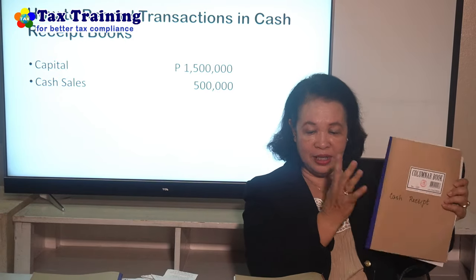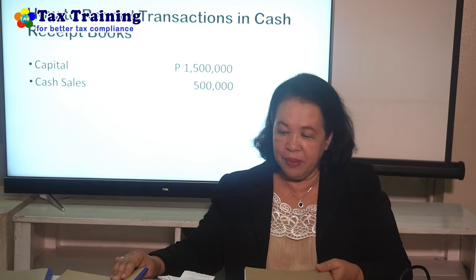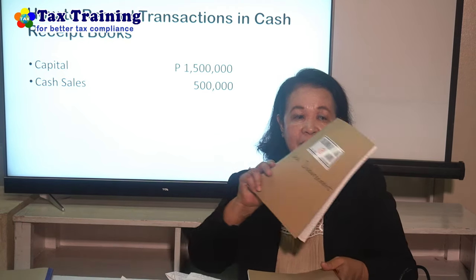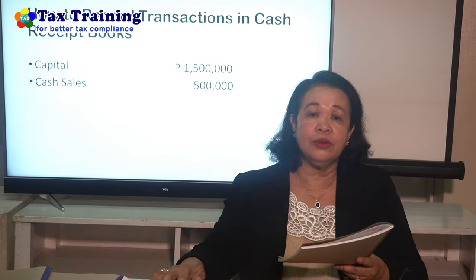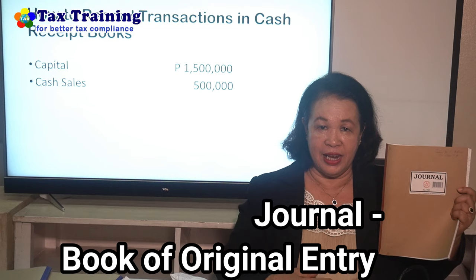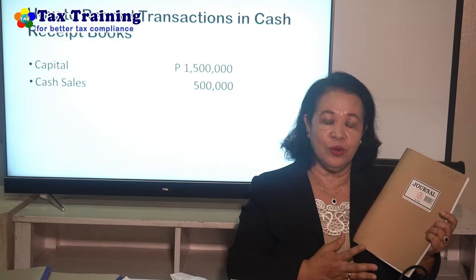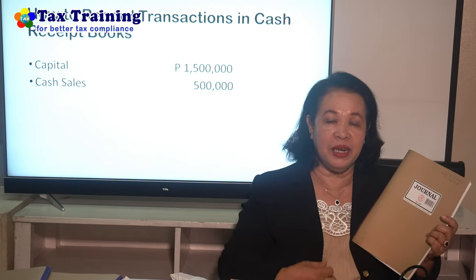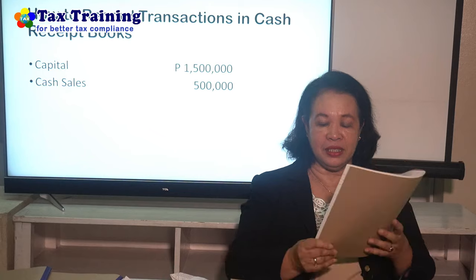The next book — before we go to cash disbursement, this covers our expenses. The book of original entry is the journal. All our transactions go here; this is the primary book of original entry because it contains the explanations on how to record our business transactions.